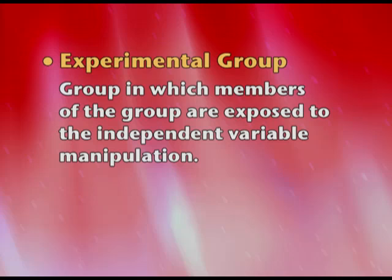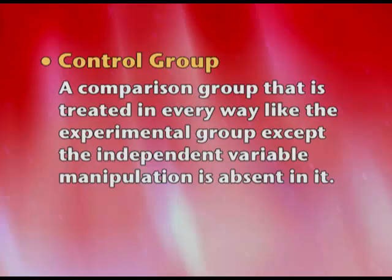We have two important concepts: experimental and control groups. The experimental group is the group where the independent variable is used. The control group is exactly the same as the experimental group, except the independent variable is not added — that is the only change; otherwise the two groups are exactly similar. If the result is the same in both groups, there was no impact of IV on DV. If the result is different, the control group tells us that even without IV, the impact remained, meaning IV did not have an effect on DV.